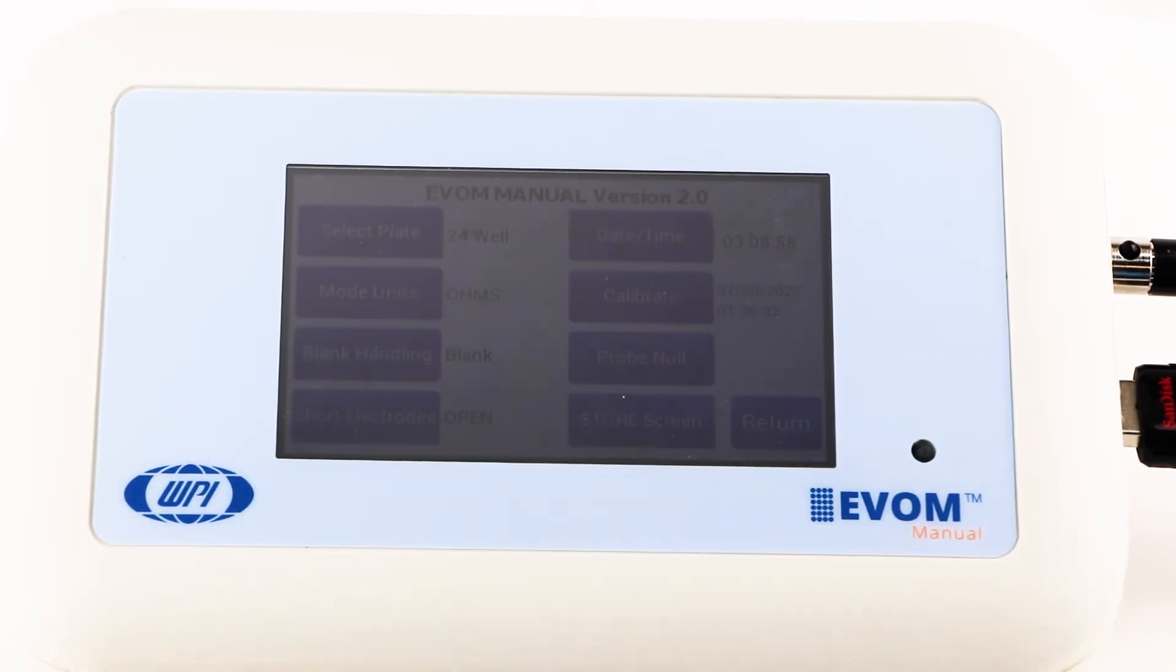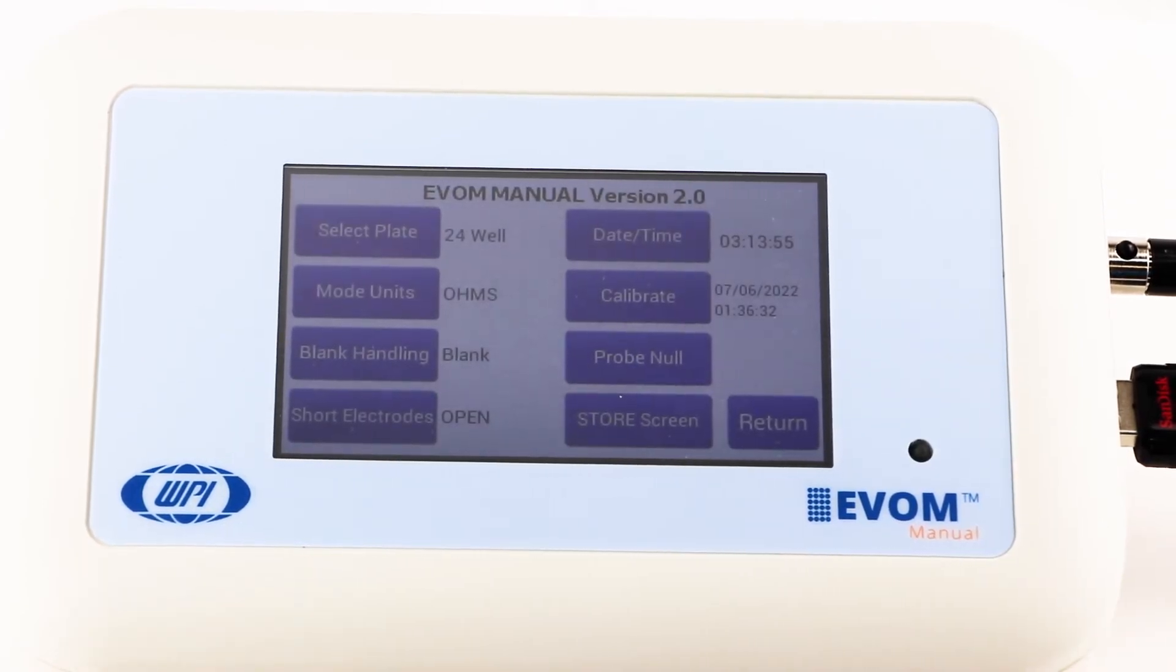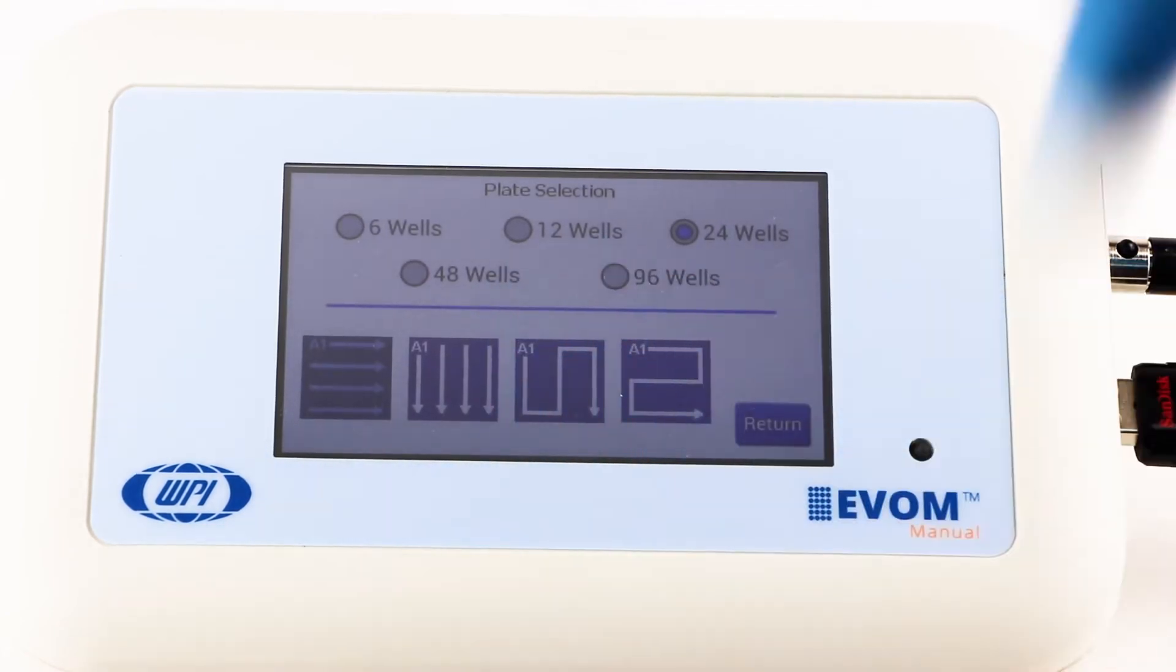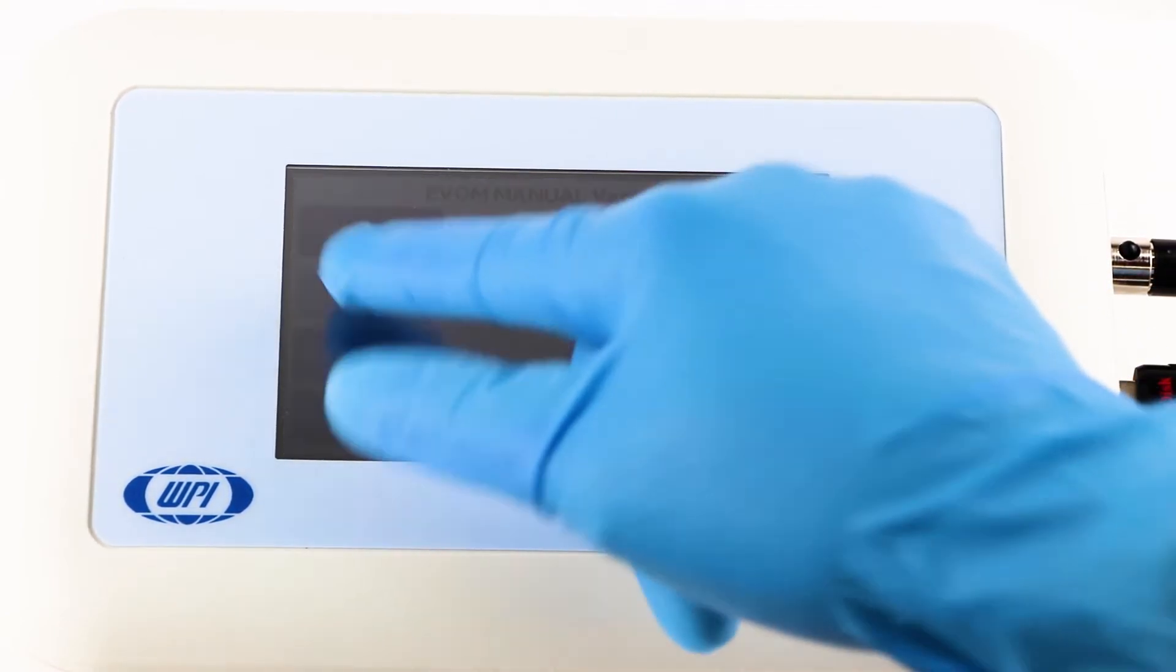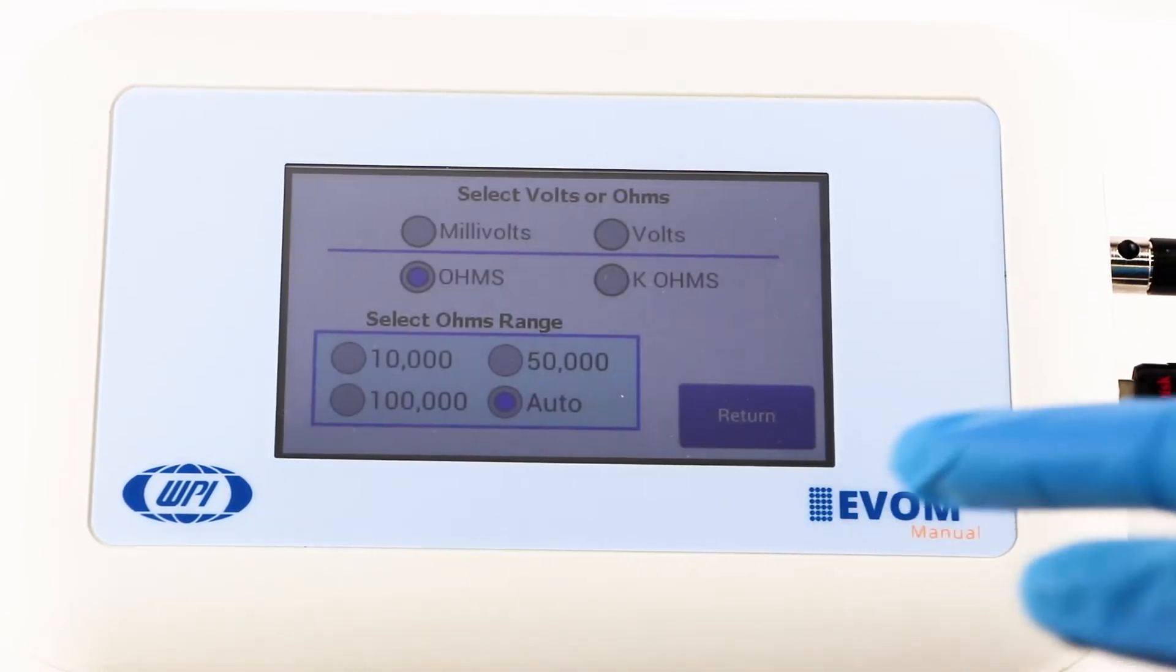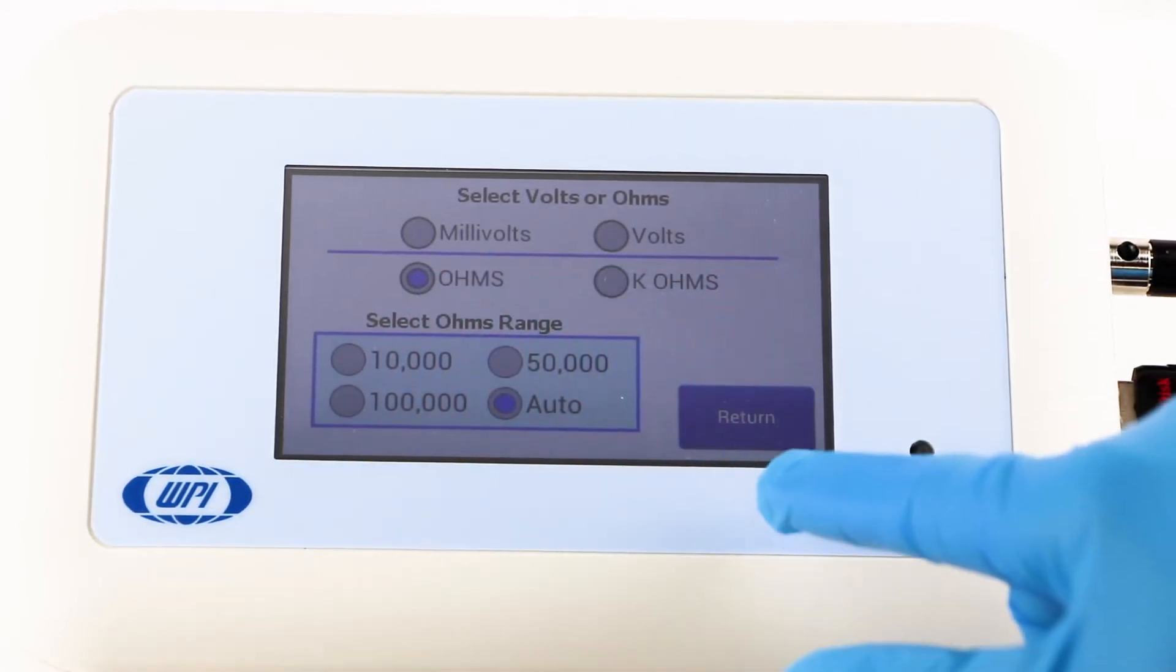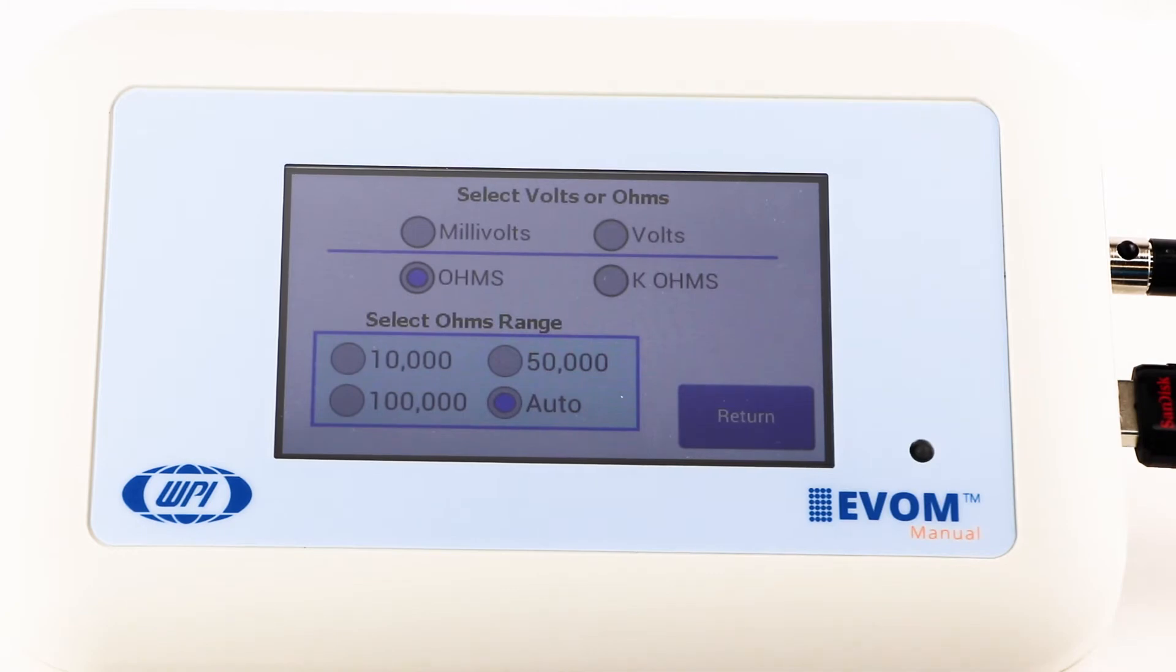Next, press setup to access the setup menu. Select plate lets you choose your plate size. Select mode units lets you choose ohms or kilo-ohms for taking resistance readings. Select the resistance range, either auto or 10,000 ohms.